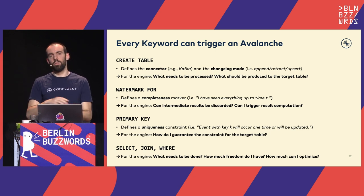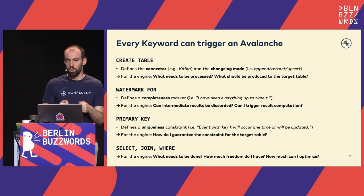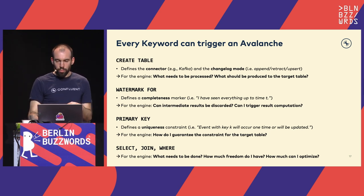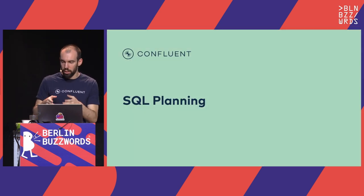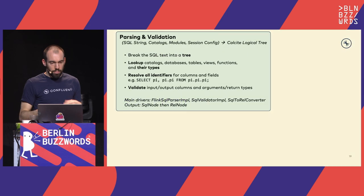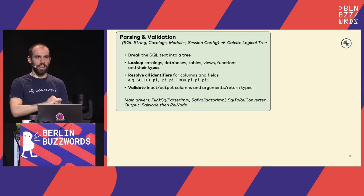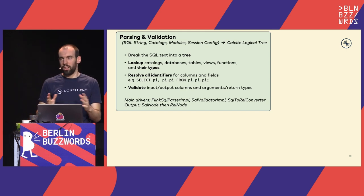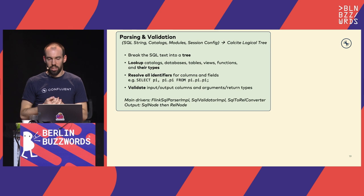Primary keys define uniqueness and with that we can guarantee constraints for the target table. Operators like SELECT, JOIN, and WHERE tell the system what needs to be done and how much freedom the system has to optimize — for example, can filters be moved around, and which join algorithm can be used to make this efficient? Now let's really look into the planning phase. I tried to summarize the Flink planning phase on one slide — the engine is huge with hundreds of rules.